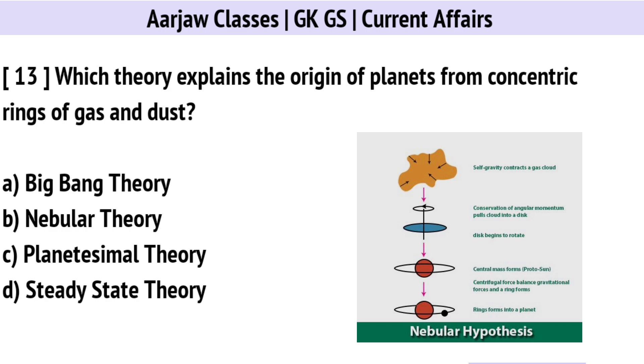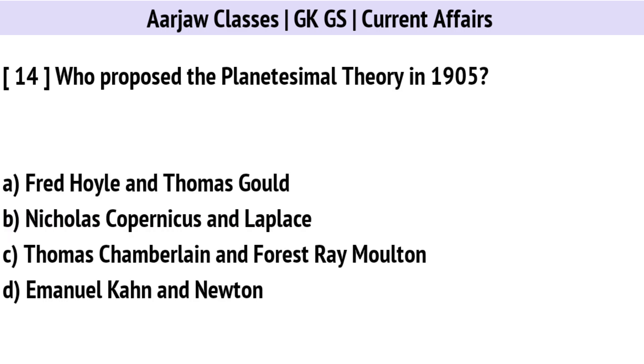Which theory explains the origin of planets from concentric rings of gas and dust? The right option is B: The Nebular Theory.